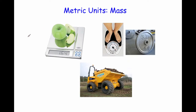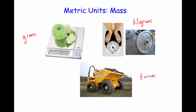Some of the common metric units for mass are grams, which would be for smaller objects, perhaps the mass of an apple or the mass of a pencil. Slightly heavier objects would be measured in kilograms, such as the mass of a person or a weights disc. And then for really heavy objects we would use tonnes — t-o-n-n-e-s — perhaps the mass of a car or an aircraft or lots of soil.